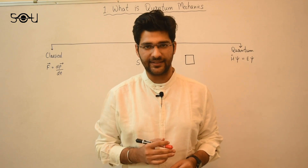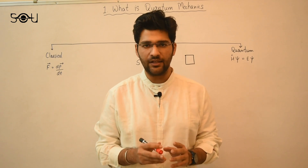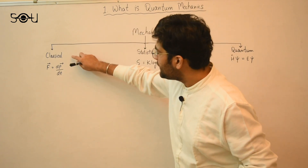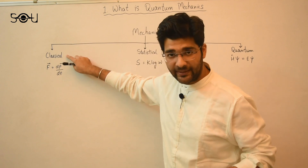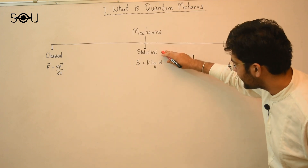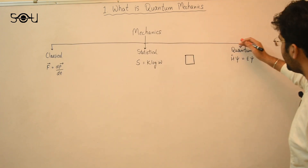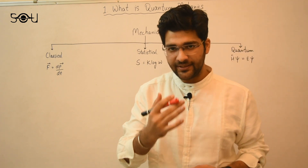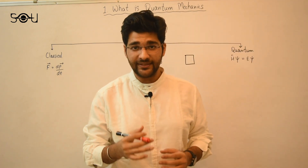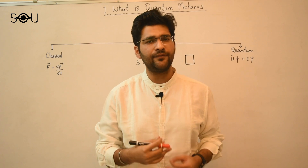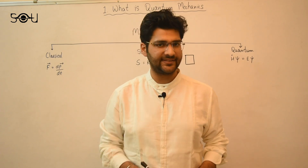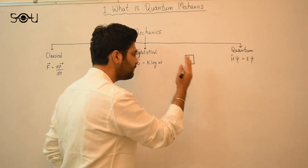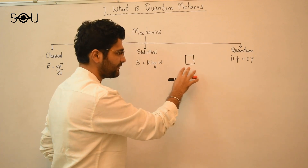Quantum mechanics is a branch of mechanics. In physics we generally deal with three types of mechanics: number one, classical mechanics; statistical mechanics; and finally, quantum mechanics. I will try to explain the difference between these three types of mechanics using a very simplified example. Suppose you have to study the motion of a box.